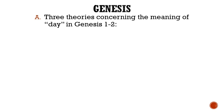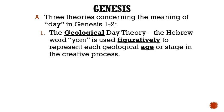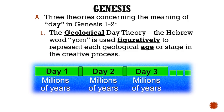The first theory is known as the geological day theory. This theory believes that the Hebrew word yom is used figuratively to represent each geological age or stage in the creative process. Therefore, they would see day 1 of creation consisting of millions of years, day 2 consisting of millions of years, and so forth.